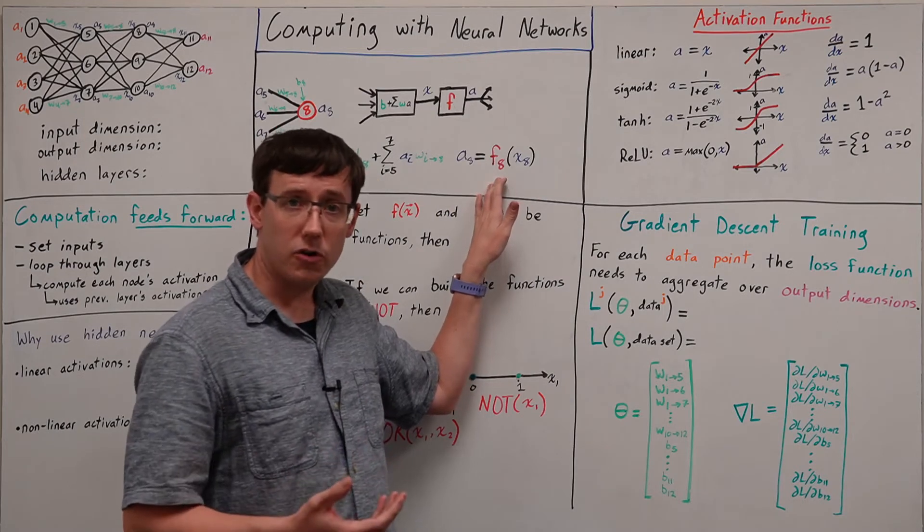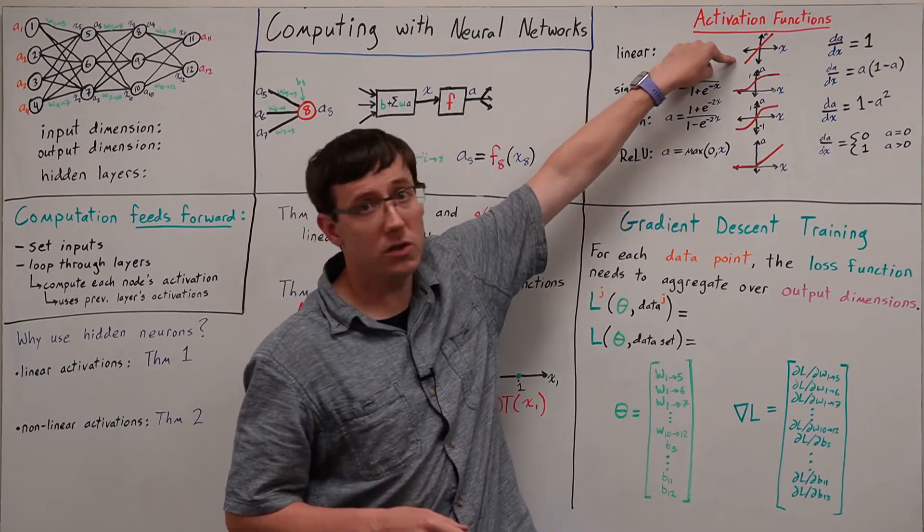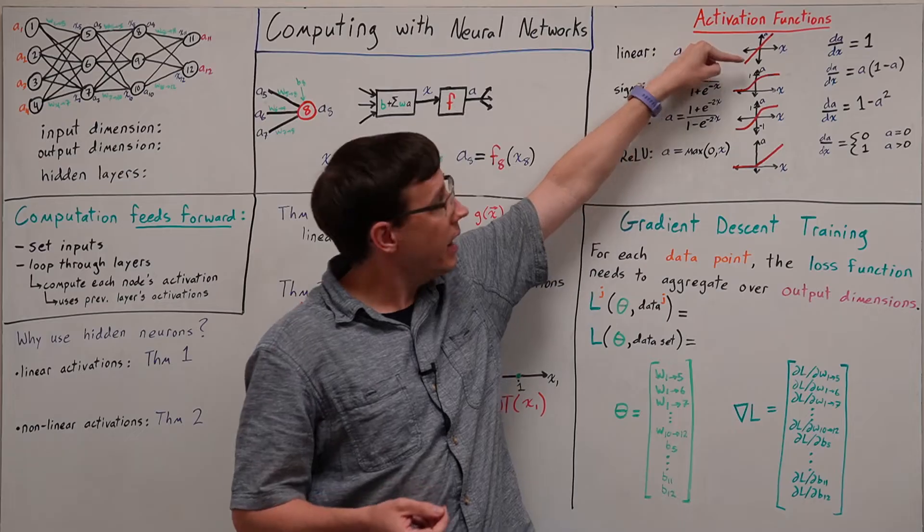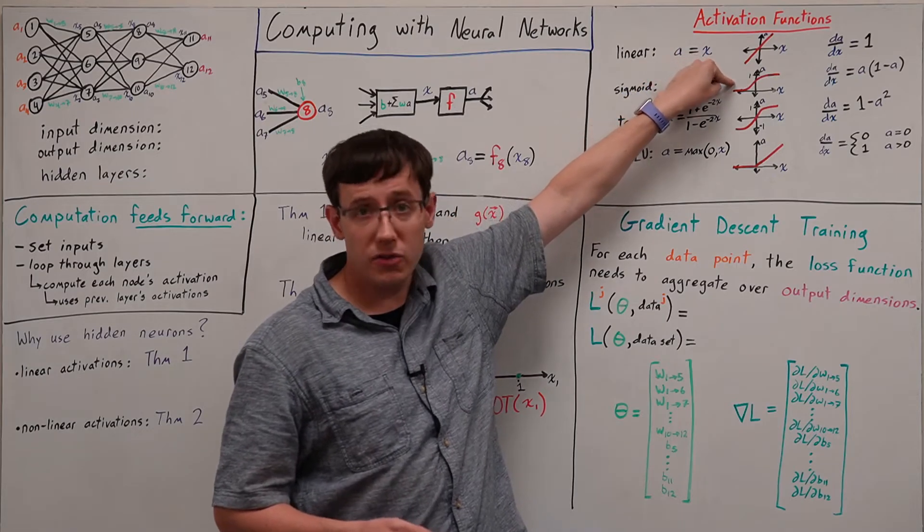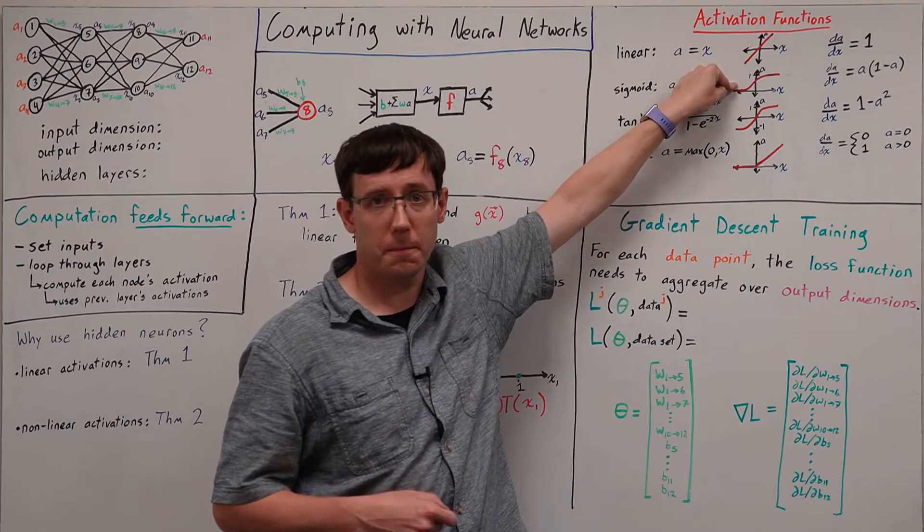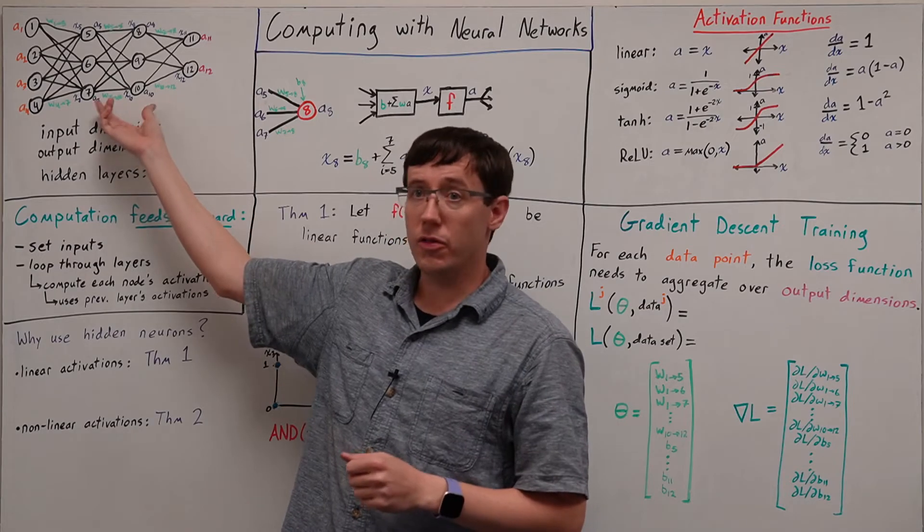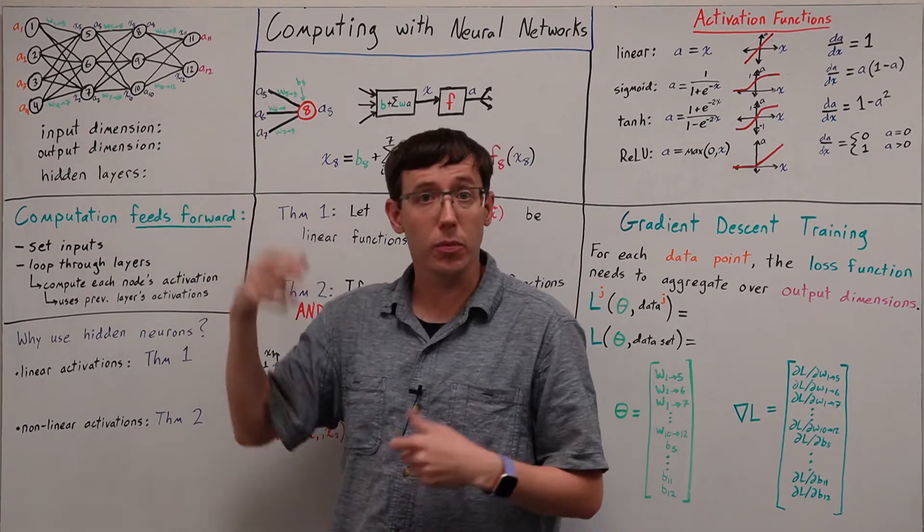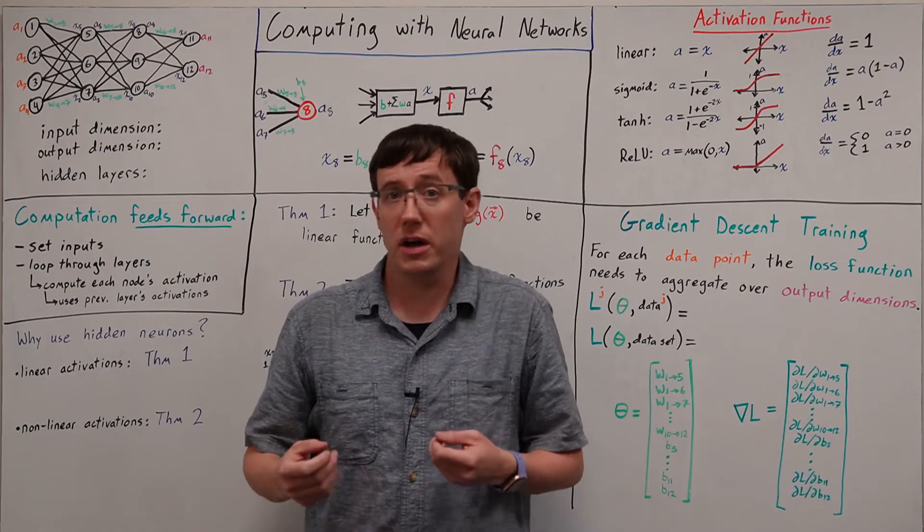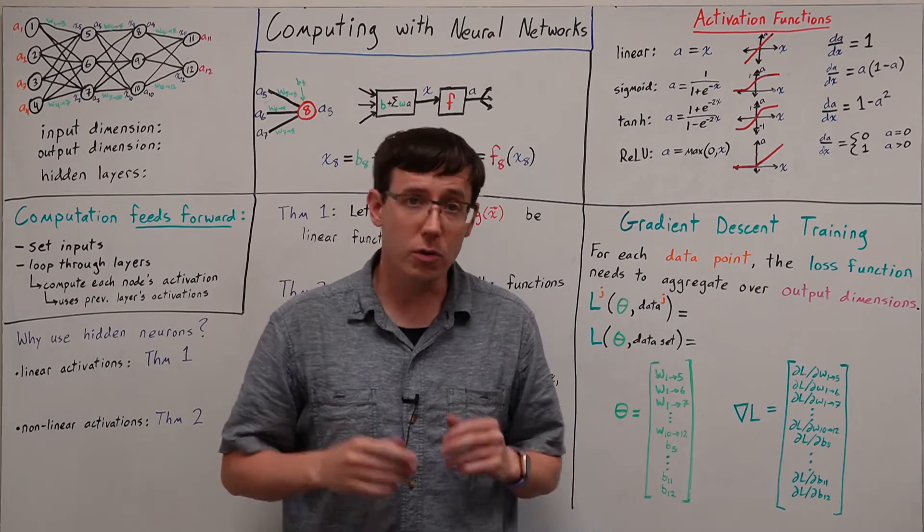For this activation function, we saw with single neuron models that if the output was linear, we could use the model for regression, and if the output was a sigmoid activation, we could use the model for classification. But now that we have many neurons in our network that are not directly producing the output of the model, it can be very useful to have some additional activation functions at our disposal.